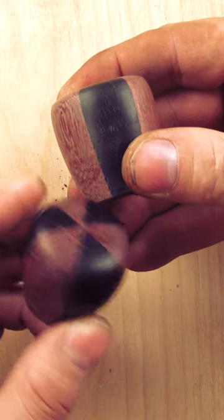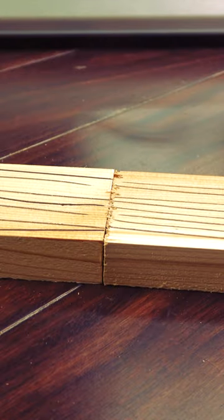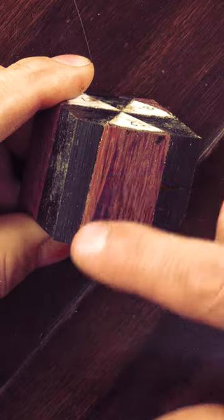The first thing we need to think about is how these guys will be glued together. From previous bite sizes, we've talked about end grain being the worst way to glue pieces together, so we'll start by making sure our grain is vertical.